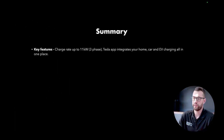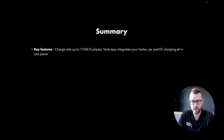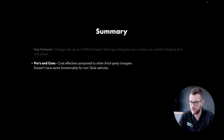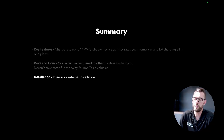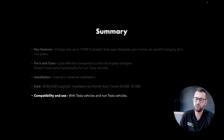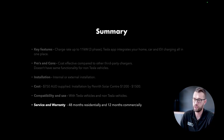In summary: the key features of the Wall Connector include a charge rate of up to 11 kW on a three-phase site, and the Tesla app integrates your home, car, and EV charging all in one place. It's a cost-effective EV charger compared to third-party alternatives, though it has reduced functionality for non-Tesla vehicles. Installation suits both internal and external use. Supply cost is approximately $750 AUD, with installation by Penrith Solar Centre ranging between $800 and $1,200. The warranty is 48 months for residential and 12 months for commercial use.